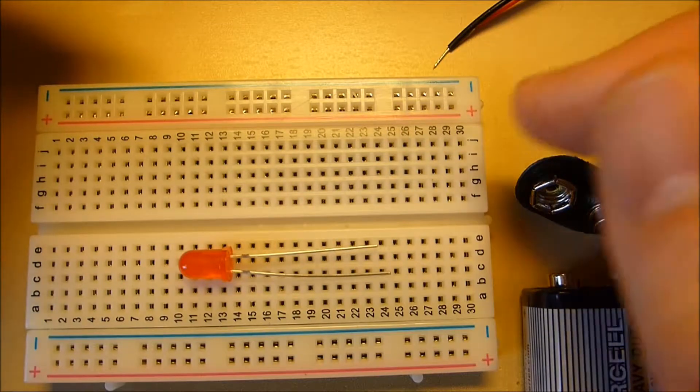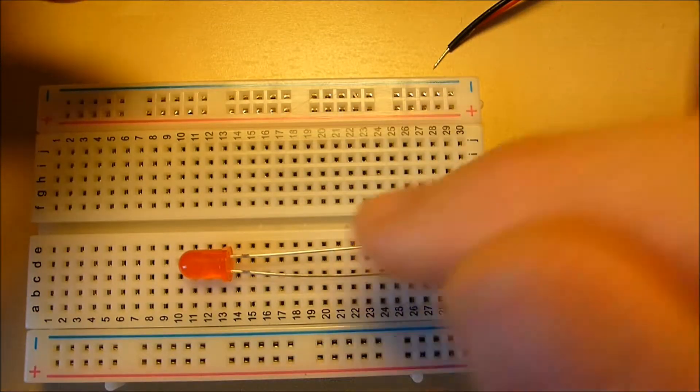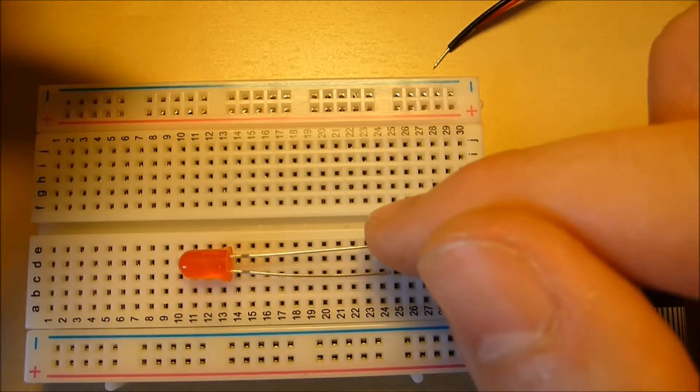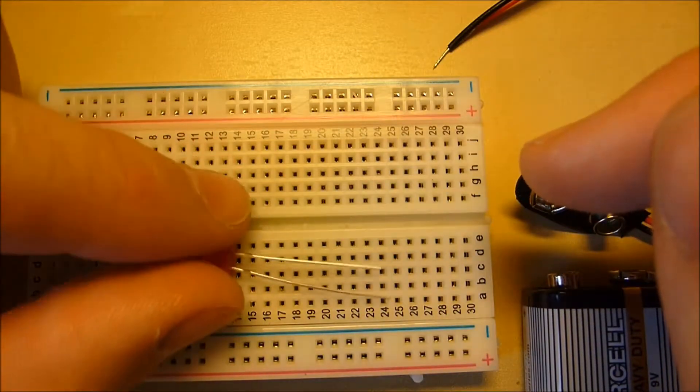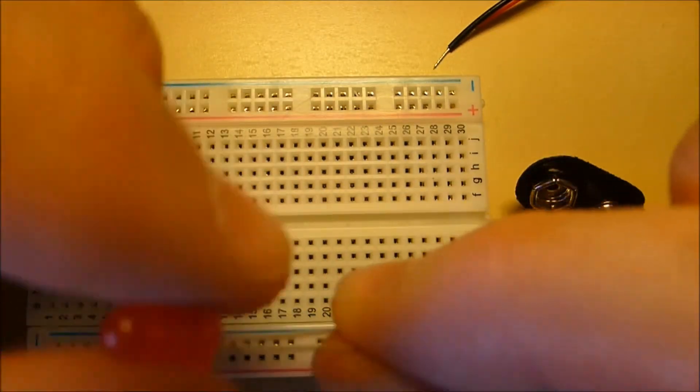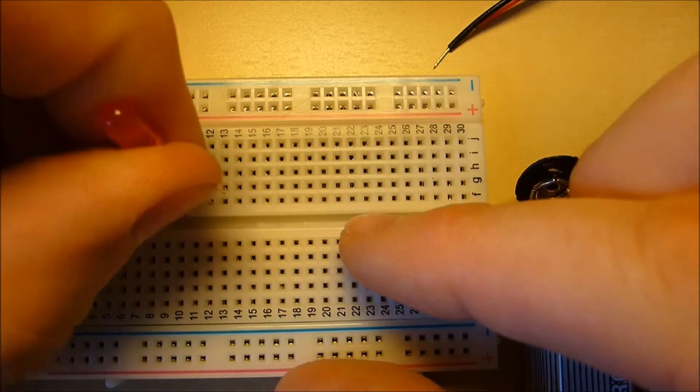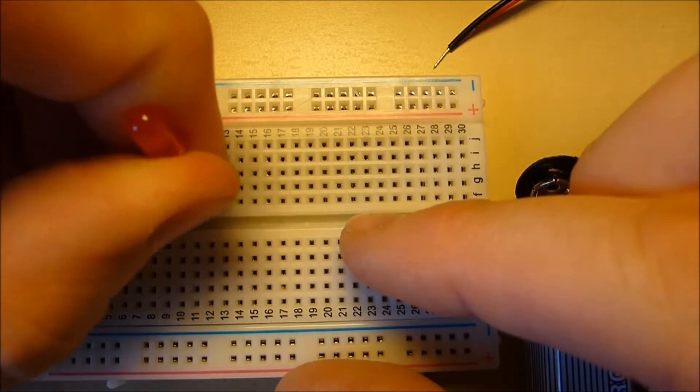So what we have to do is we have to make sure that the positive rail is connected to the positive terminal of the LED, and the negative terminal of the LED is connected to the negative rail, which then connects to the battery. So let's put in our LED, let's do it like that, quite fiddly sometimes to put these in.